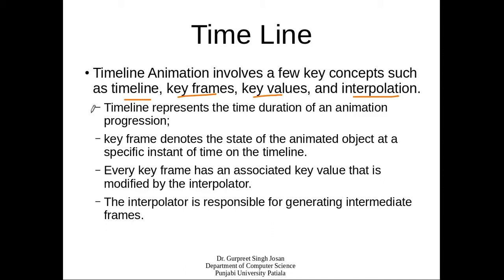The timeline represents the time duration of an animation's progression — for example, some animation may be two seconds, some three seconds, some may take minutes or hours. The key frame denotes the state of the animated object. Each key frame contains the object to be animated and represents its state at a specific point in time. For example, in the first key frame a circle's color may be red, and in the second key frame the same circle may be green — we are changing the state, which represents the properties of the object.